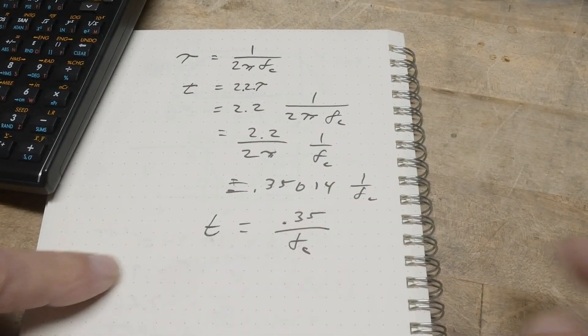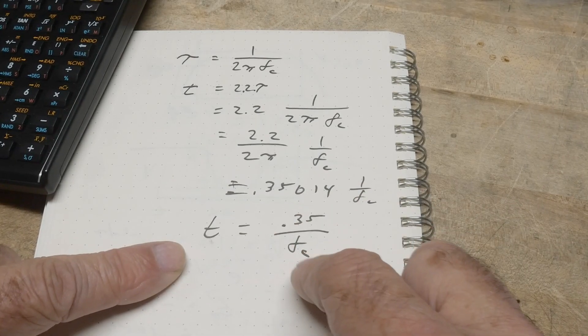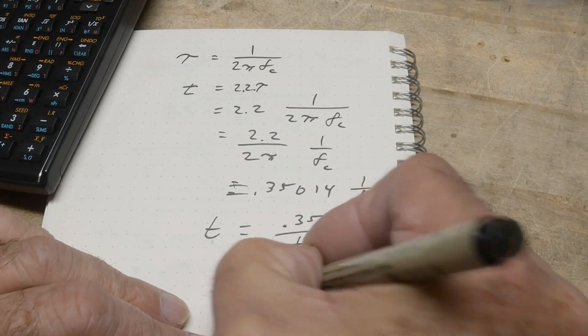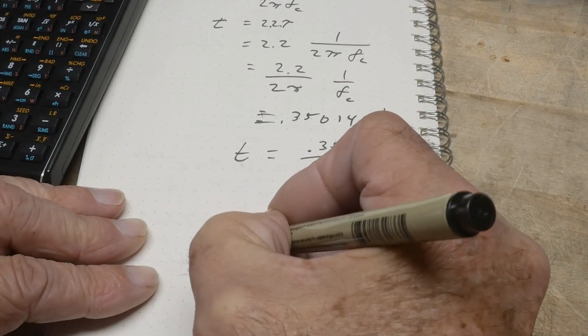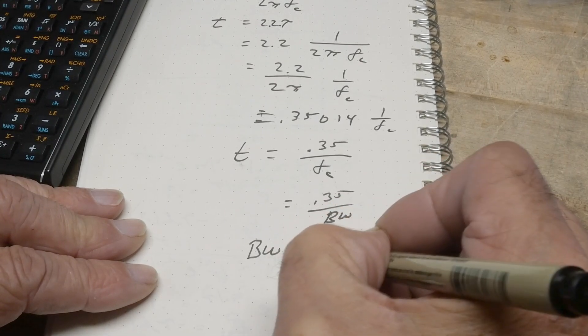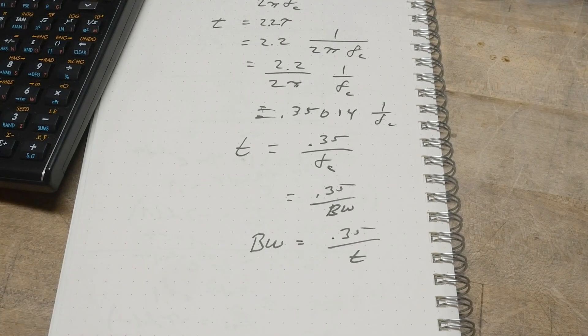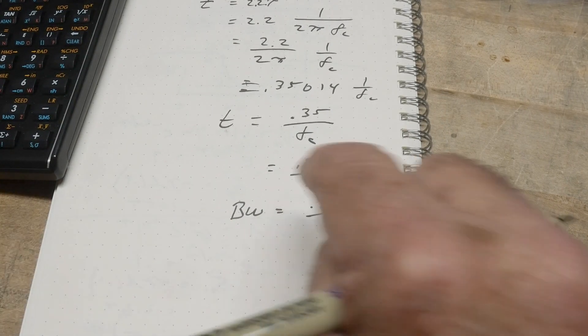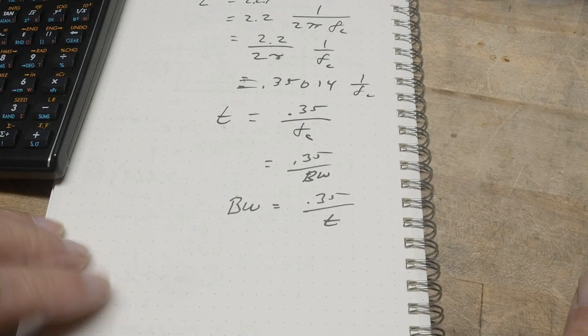So the rise time is 0.35 divided by fc. What is fc? fc is the cutoff frequency. That's the thing we call bandwidth. 0.35 divided by bandwidth. Or bandwidth equals 0.35 divided by time. You can do it either way. All right. So if we want to figure out the bandwidth of the oscilloscope, we can measure its rise time and divide it into 0.35 and that will give us our answer.